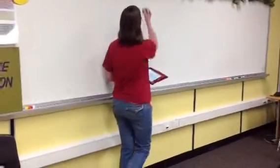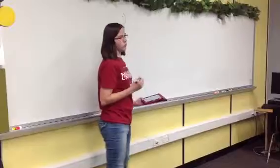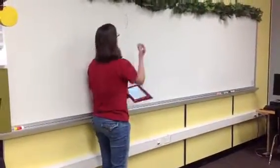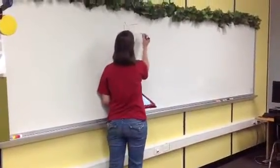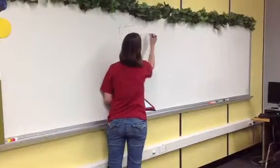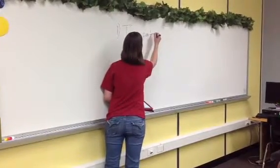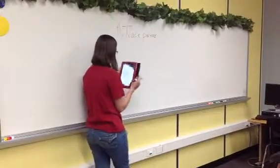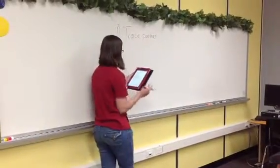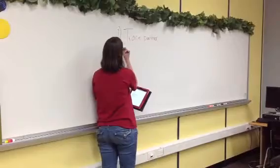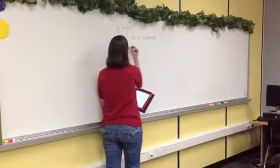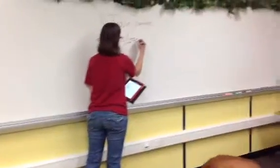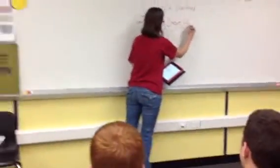So the first thing you're going to do — I'll write the steps, that way you guys will remember when you get the project — you'll get a piece of paper and then you'll trace your partner. And then the second thing you'll do is think of the ethos, logos, and pathos.